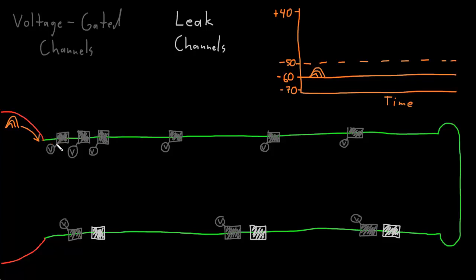This voltage-gated ion channel has a mechanism to sense this voltage change, and when the threshold potential is crossed, it's going to open. These are going to be sodium channels. Recall that the electrical and diffusion forces acting on sodium ions are strongly trying to drive them into the neuron. So when this voltage-gated sodium channel opens, sodium flows into the neuron, causing that part of the membrane to depolarize from all these positive charges now on the inside.